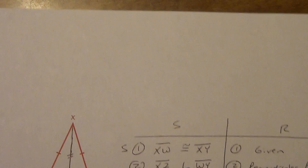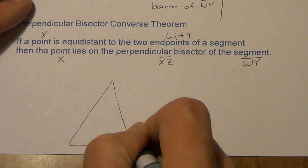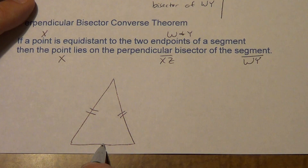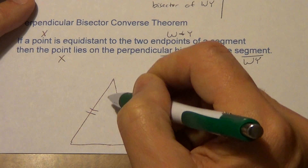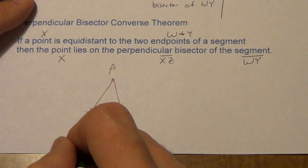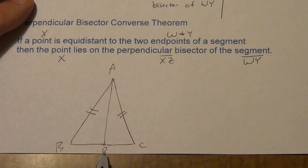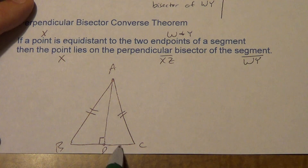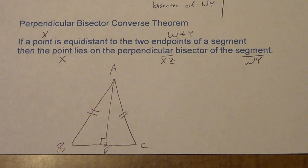We can do algebra with the converse as well. If I tell you these segments are congruent, then I know there's a perpendicular bisector here. If they tell you it's perpendicular, then you know it's a bisector; or if they tell you it's a bisector, you know it's perpendicular. You can set up algebra where these are equal, or algebra where an angle has to equal 90. That's the converse theorem — we don't use it quite as much, but make sure you understand both.